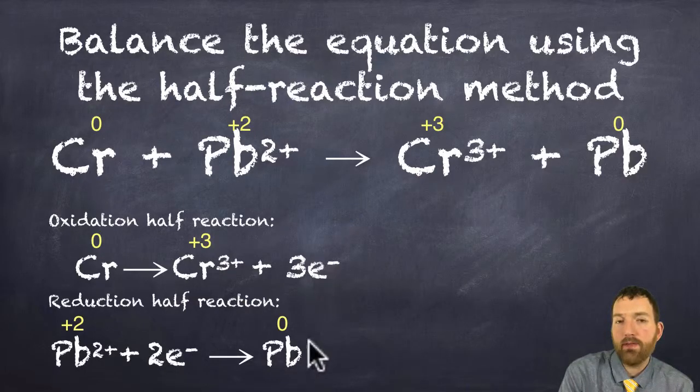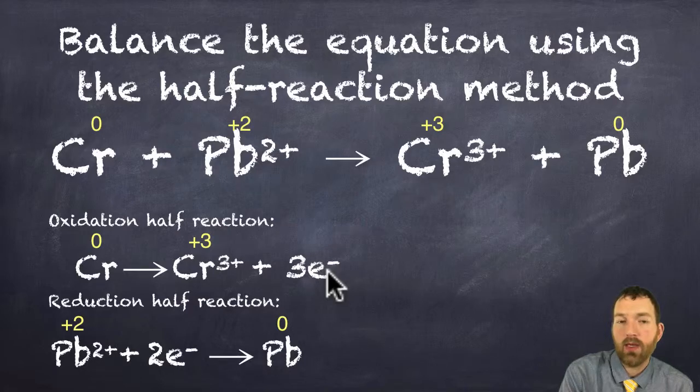I need to multiply both of these half reactions separately by some number to make them the same. I can't make them both three. I can't make them both two. But I can make them both six.